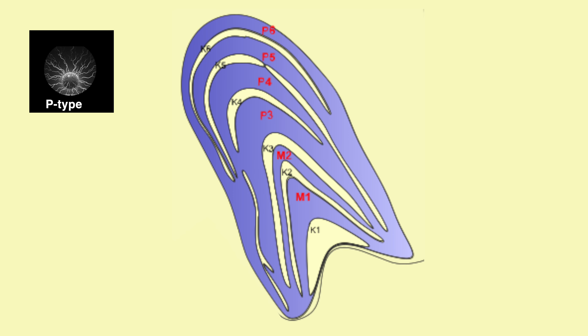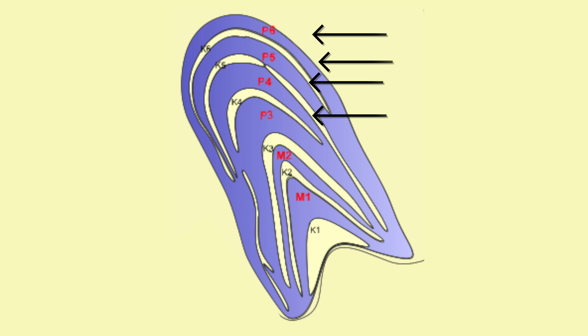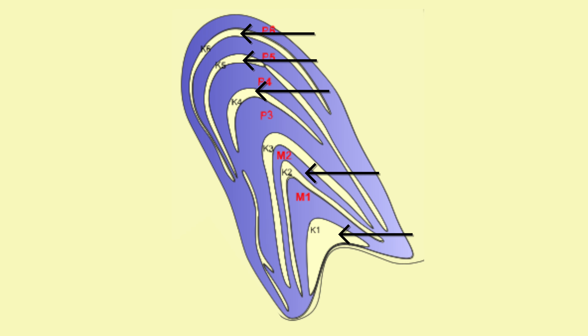The P-type cells project to the parvocellular layers of the LGN, while the M-types project to the magnocellular layers. The magnocellular layers are layers 1 and 2, and the parvocellular layers are layers 3, 4, 5, and 6. There's also a third type of retinal ganglion cell, the non-M non-P cells, which project to the koniocellular layers — the layers in between the numbered layers.